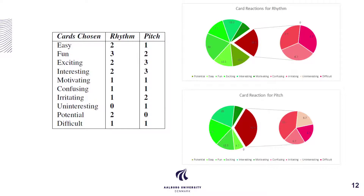In the results, the rhythm game had the best results for positive card-picking, which comes as no surprise since cochlear implant users generally have an easier time understanding rhythmic attributes in music rather than pitch. However, both games had quite high ratings for exciting and interesting, indicating that cochlear implant users are open to the idea of games as a training platform.